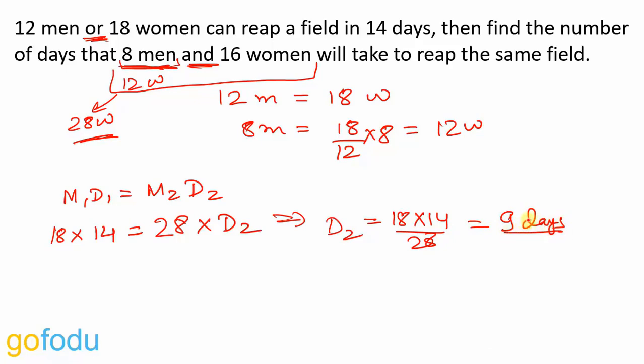So in questions involving OR, this relation gives us men and women equivalents. We can find men in terms of women or women in terms of men. Then in later part of the question where AND is involved we convert both men and women to either all men or all women. Then of course we have M1D1H1 upon W1 is equal to M2D2H2 upon W2. Thank you for watching.